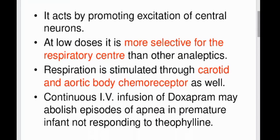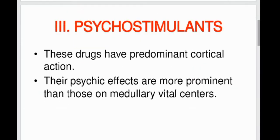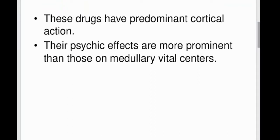Doxapram acts by promoting excitation of central neurons. At low doses it is more selective for the respiratory center than other analeptics. Respiration is stimulated through carotid and aortic body chemoreceptors.